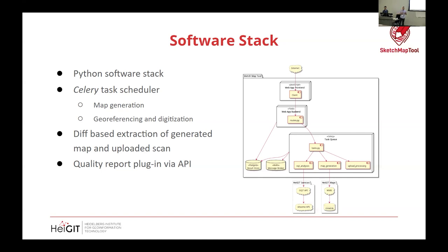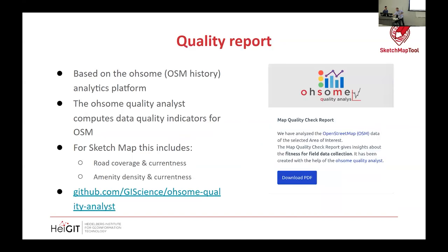There's also a quality report plugin — a different service we build and maintain at our research institute called OQT, or the OpenStreetMap Quality Tool. It's a platform where different quality indicators based on OpenStreetMap data come together, including intrinsic and extrinsic quality checks. For SketchMap, we only use coverage and currentness of the road network and amenities. We don't need a perfect or complete map — we just need participants to be able to orient themselves. This quality report serves as decision support.